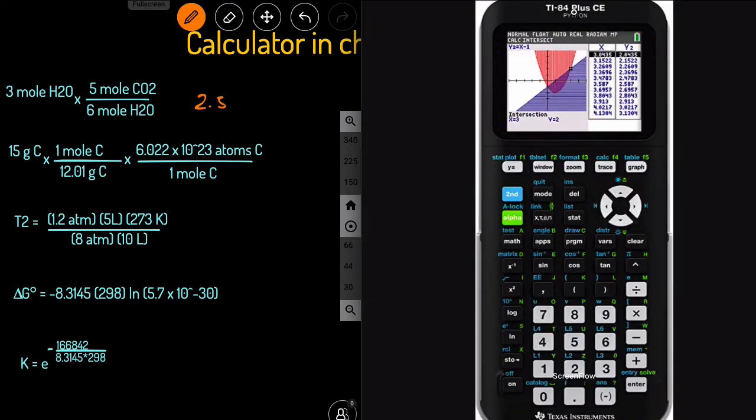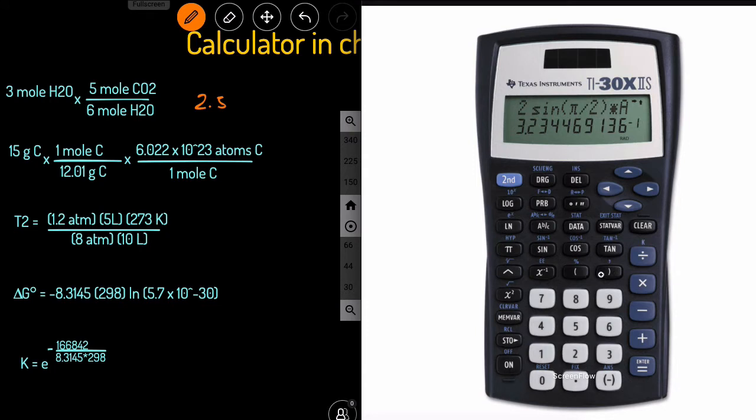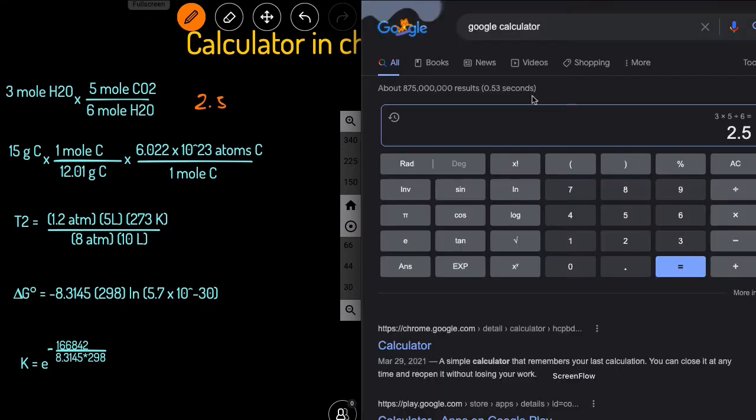So if you were using a TI-84 plus CE, the parenthesis are these two buttons right here. And if you're using the other calculator, then you see the parenthesis right here. Okay, let's move on to the next expression.